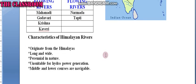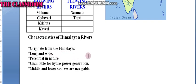Let us discuss the characteristics of Himalayan rivers and south Indian rivers. Himalayan rivers are originated from the Himalayas, and they are long and wide. South Indian rivers are originated in the Western Ghats and are short and narrow.